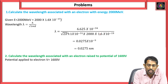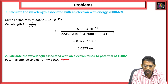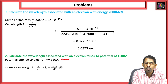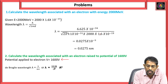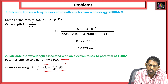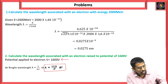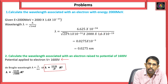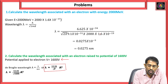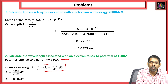Based on the de Broglie wave equation with potential energy given, V = 1600 volts. We have modified this equation as lambda = 12.26 / √V, which is in terms of angstroms. Substituting V = 1600, we get lambda = 0.3065 angstroms.